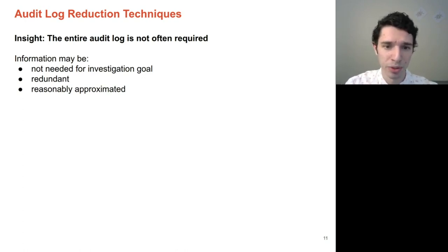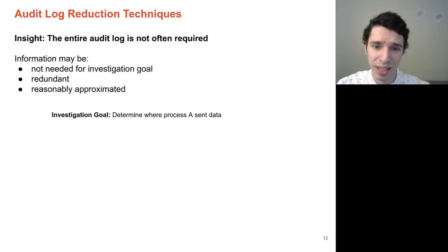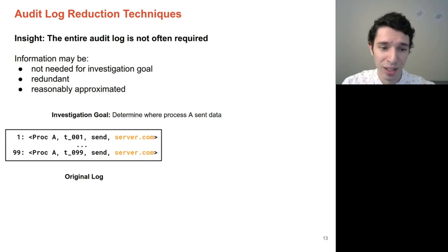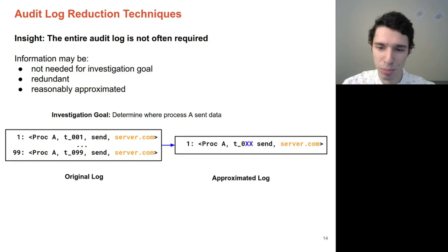So to show an example, let's imagine that you are an analyst, and you would like to know where process A sends some data. Given an original audit log of process A sending 99 network packets to server.com, you'd have your answer very clearly. However, one can also imagine a reasonable approximation might be to simply blur that timestamp and say that process A sent a single network packet to server.com.